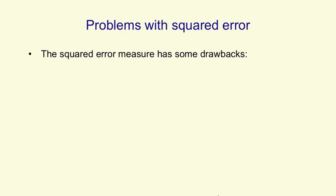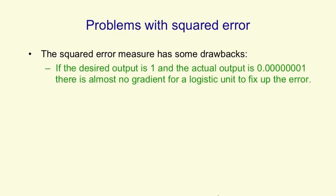But the squared error measure has some drawbacks. If, for example, the desired output is 1 and the actual output of a neuron is one billionth, then there's almost no gradient to allow a logistic unit to change. It's way out on a plateau where the slope is almost exactly horizontal.